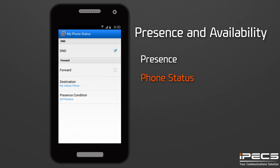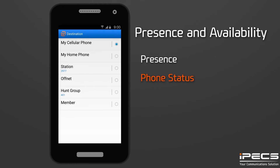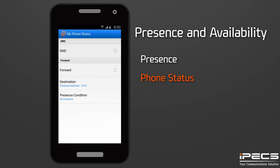Do Not Disturb mode will prevent your IPEX UCS client from receiving calls when you're busy, and callers will receive a busy tone. Forwards allows you to redirect incoming calls to other extensions, to an outside number, or to your voicemail. Select or enter the destination number, set the forward condition, and then select Forward to activate call forwarding.